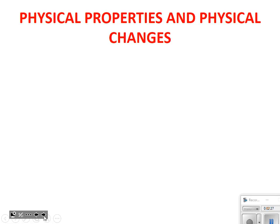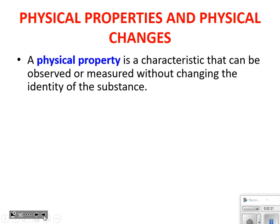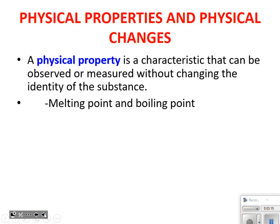Physical properties and physical changes. A physical property is a characteristic that can be observed or measured without changing the identity of a substance. The key part is that last phrase — without changing the identity of a substance. Examples include melting point and boiling point. If I have a cube of ice and I set it out on this table, it's going to melt and change into a liquid.